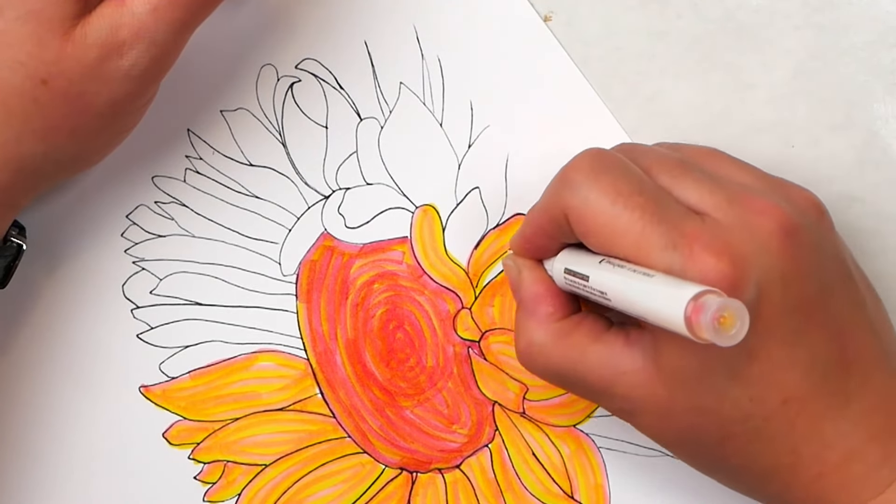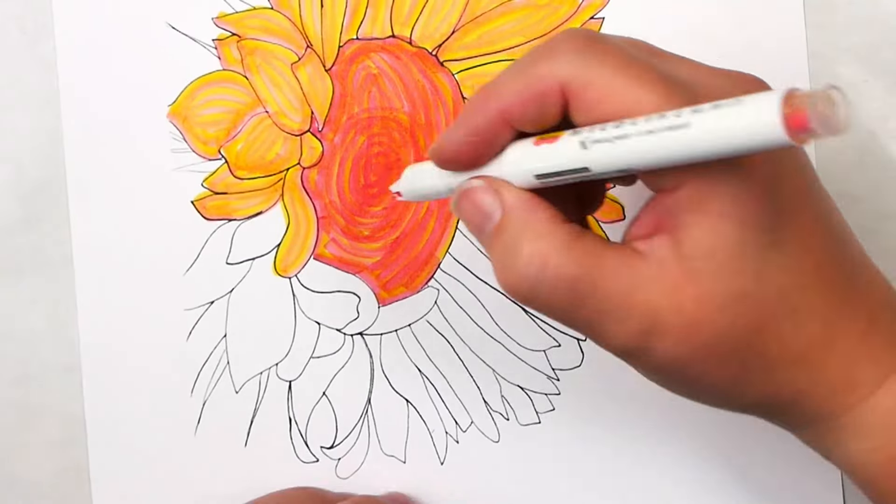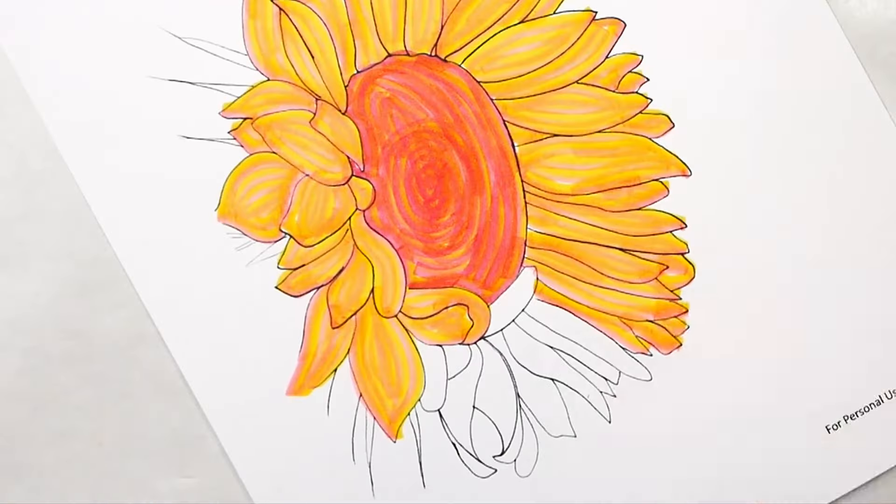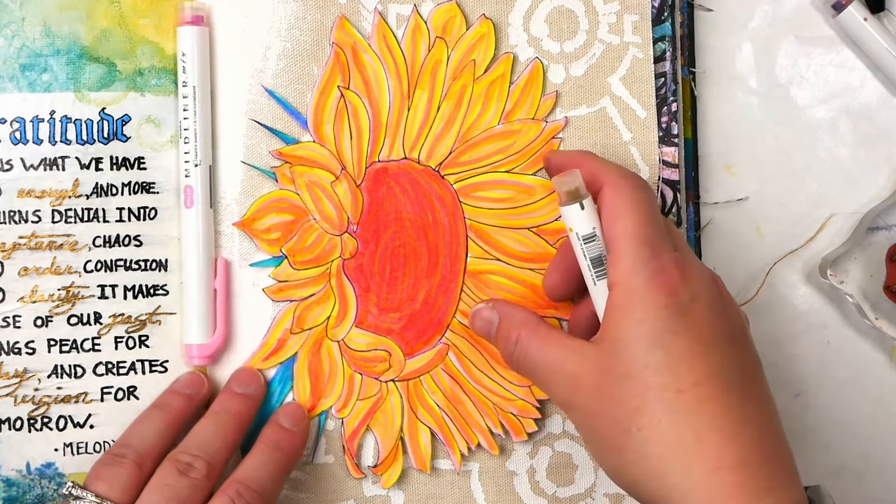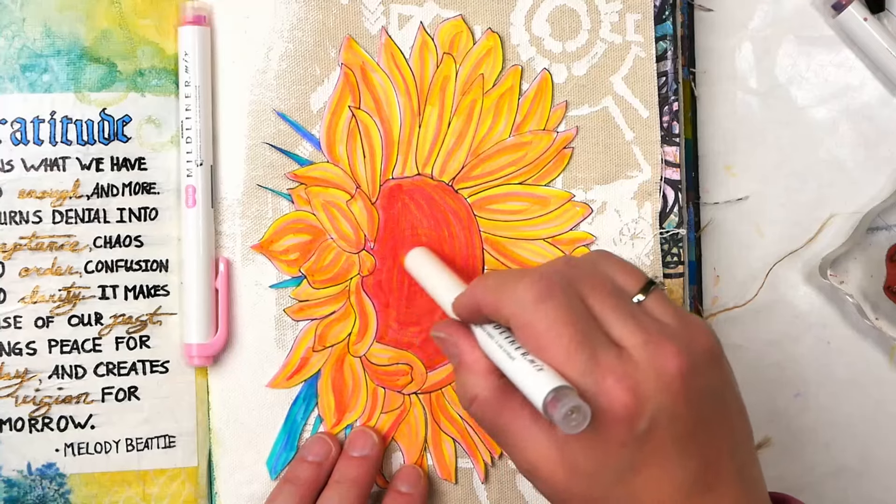So after using the first layer of color, you can add in some shading or other details. My first layer of color was using the coral pink and lemon yellow marker, but then I chose to add in additional highlights with the red and gold pen.